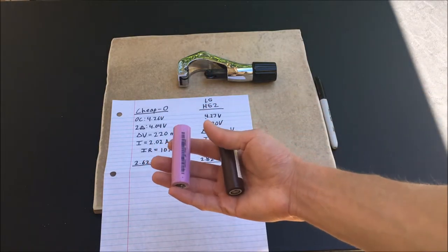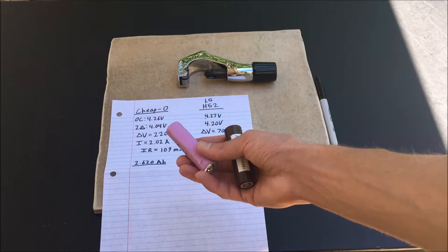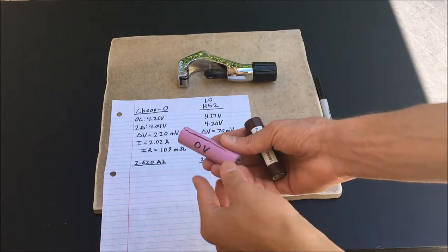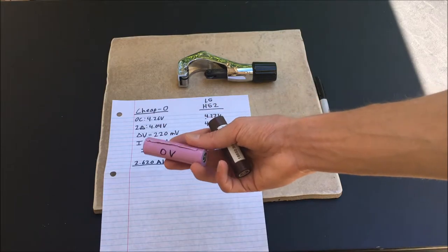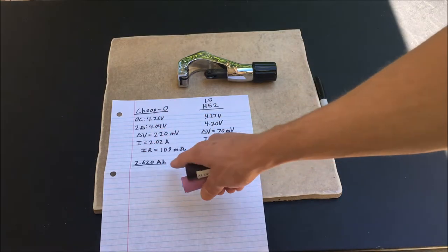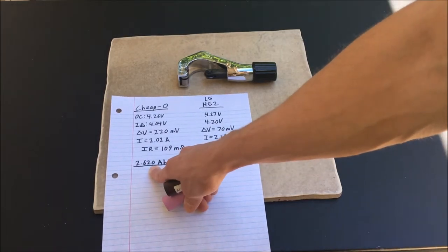Now in certain knockoff cells you may actually find a smaller cell inside surrounded by filler material to make it heavy, but I don't suspect that this is the case in this particular instance because the capacity is pretty good still.